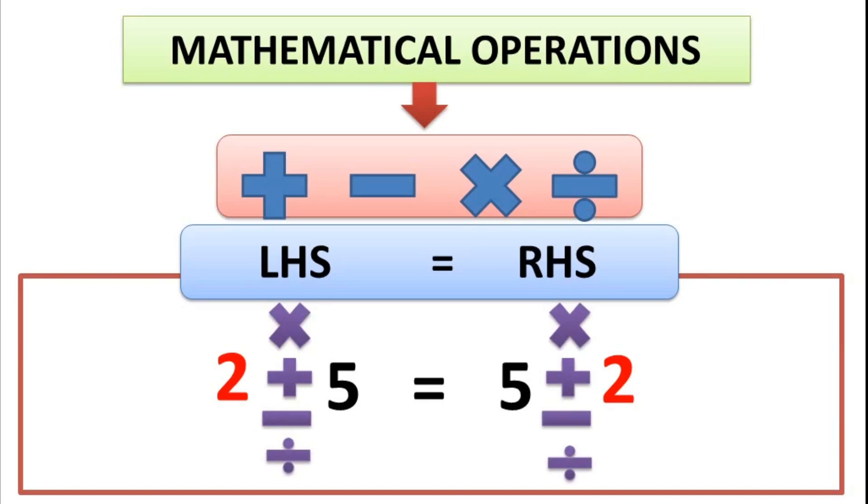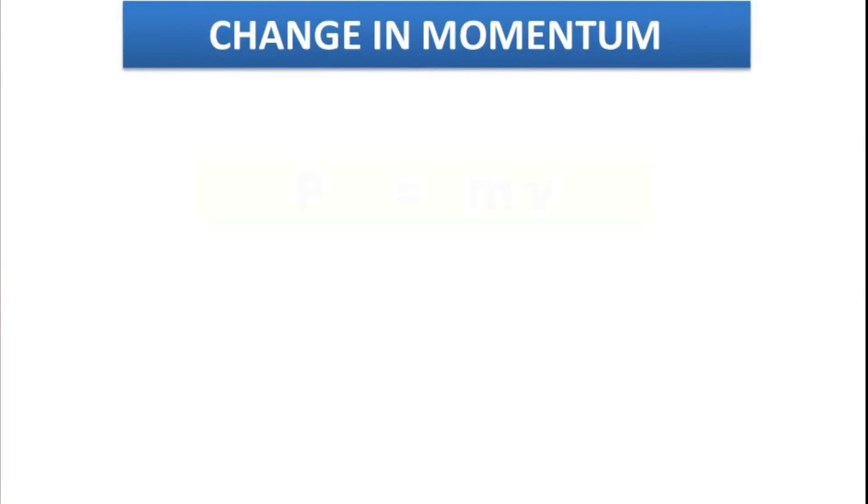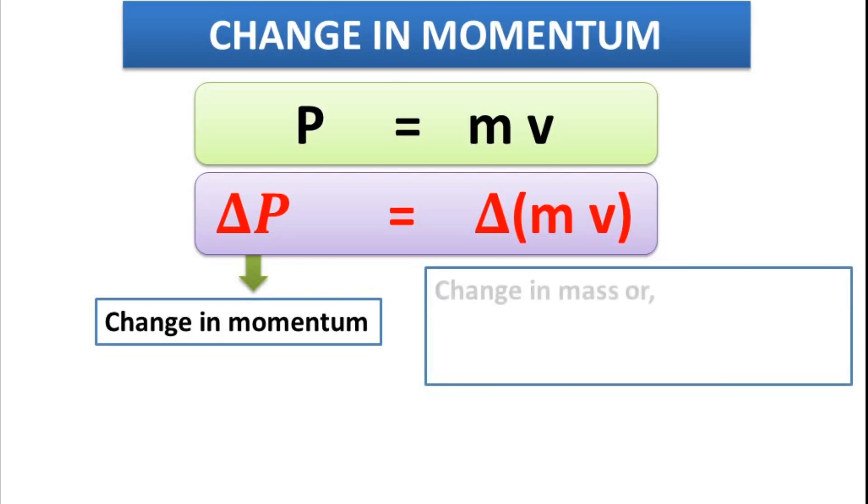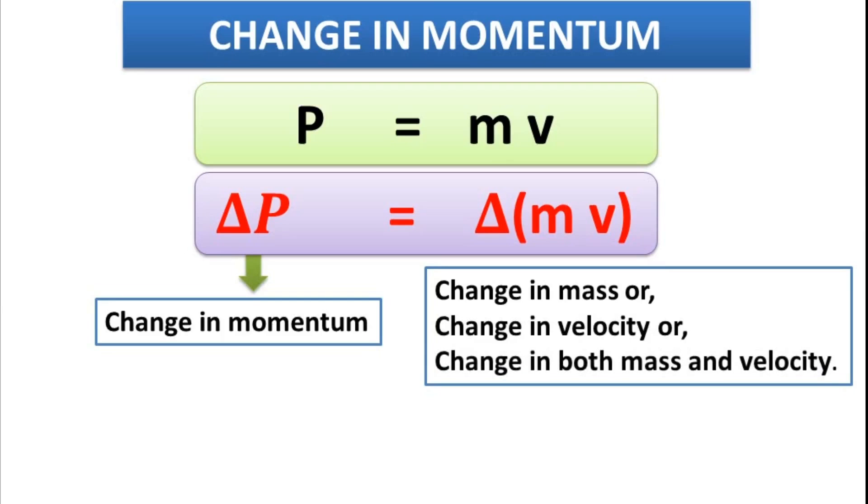Now, let us take the equation of momentum, that is P is equal to M V. And if we want to show change in momentum, we have to write the symbol delta, but not just one side, but both sides. So, delta P is equal to delta M V. That means, if momentum changes, it may be due to change in mass or due to change in velocity or due to change in both mass and velocity. In smaller classes, you have studied that mass of a body does not change. What changes? Weight of a body changes. So, if mass is constant or does not change, then change in momentum may be due to change in velocity.